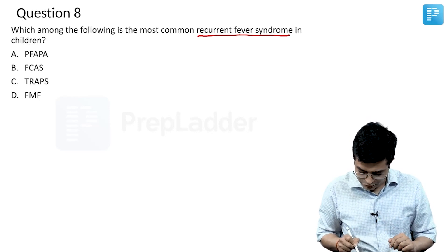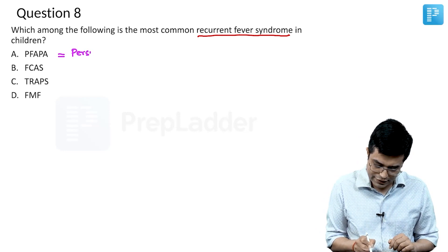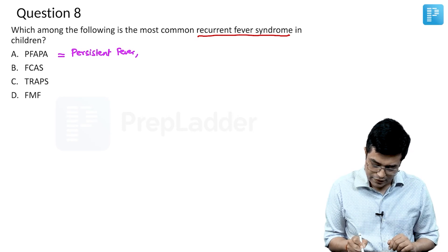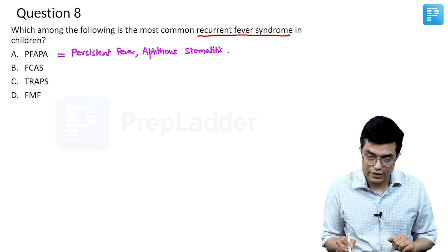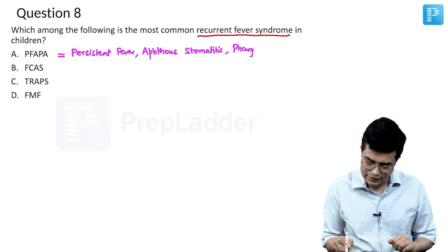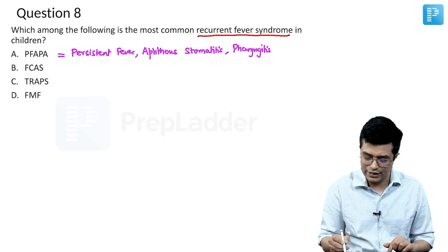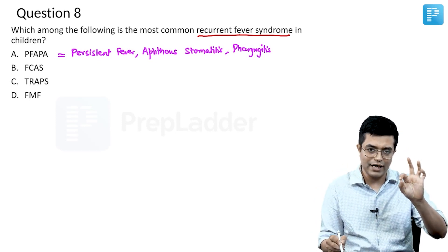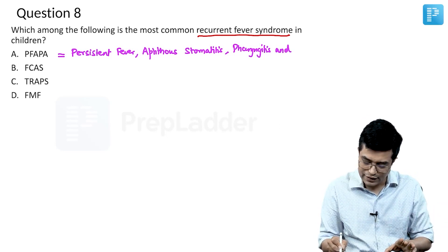Let us first write down the full forms. PFAPA stands for Periodic Fever, Aphthous Stomatitis — that is oral ulcers — Pharyngitis, and Adenitis. Pharyngitis is sometimes mentioned as pharyngotonsillitis in books, but Nelson calls it pharyngitis. It is an exudative pharyngitis that frequently involves tonsils, and cervical lymphadenopathy or lymphadenitis is common.